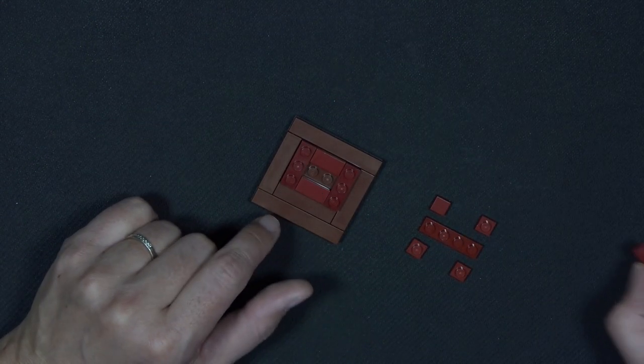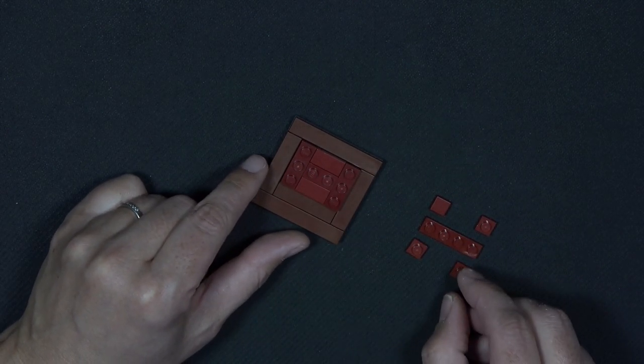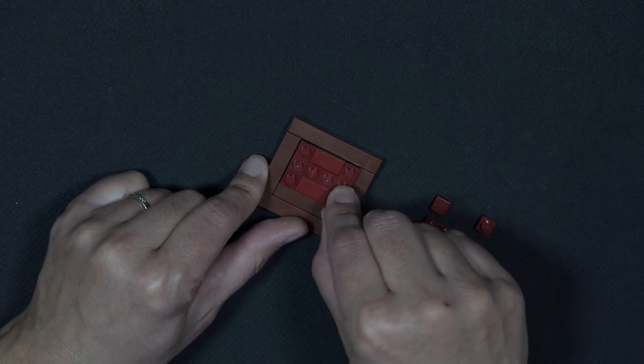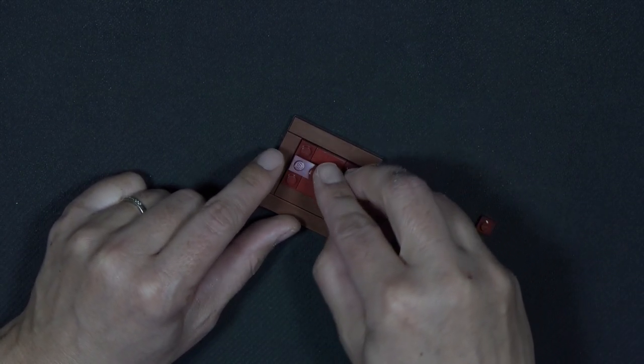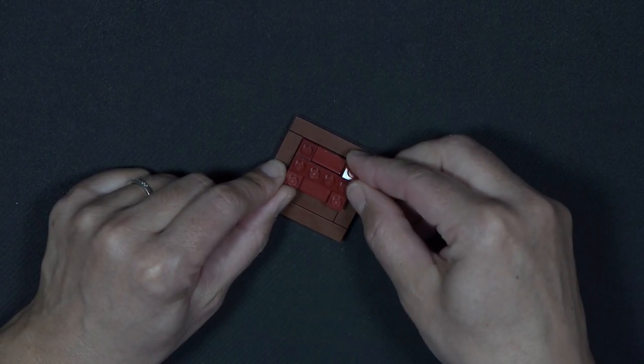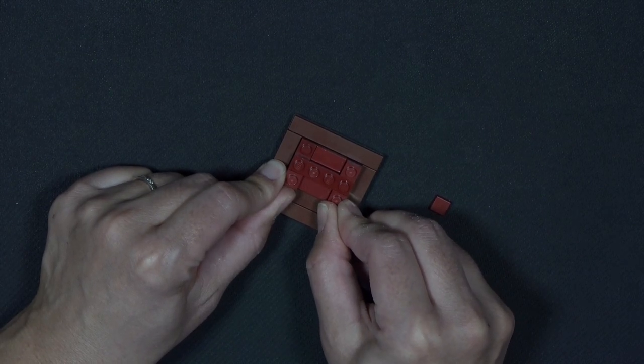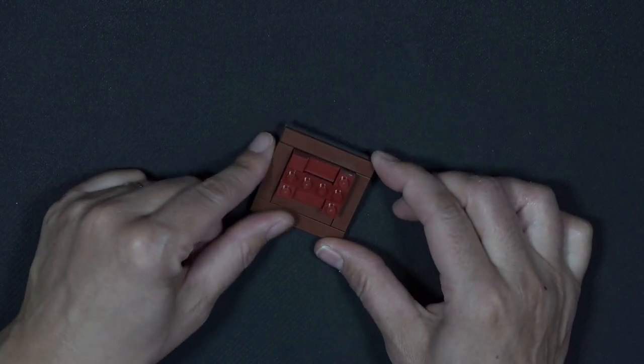These are 1x2 tiles, and a 1x2 plate in the middle. Then I have a 1x1 plate here, a 1x4 plate there, a 1x1 plate here, another one here, and then on this stud we have a 1x1 tile in dark red.